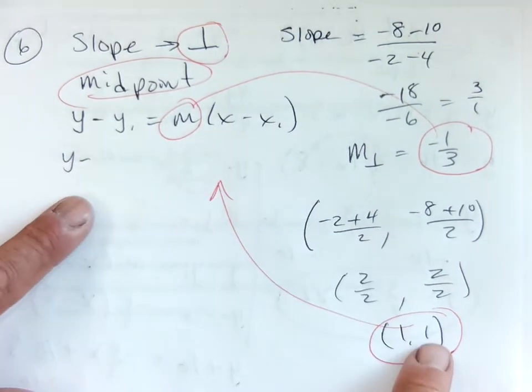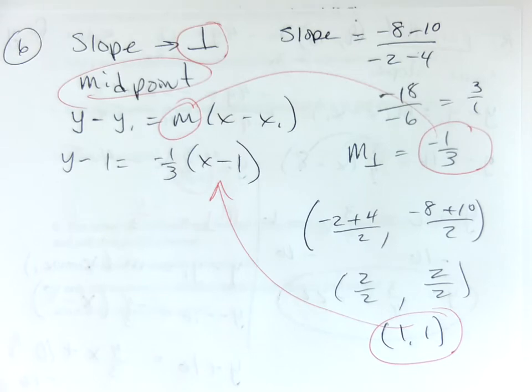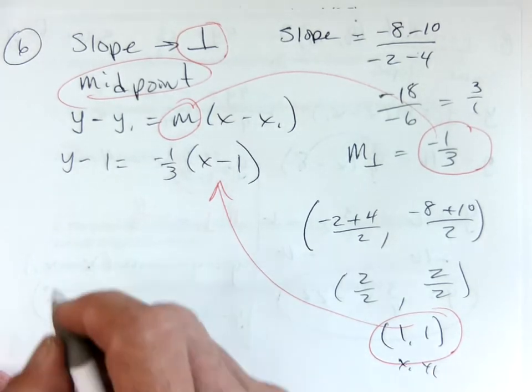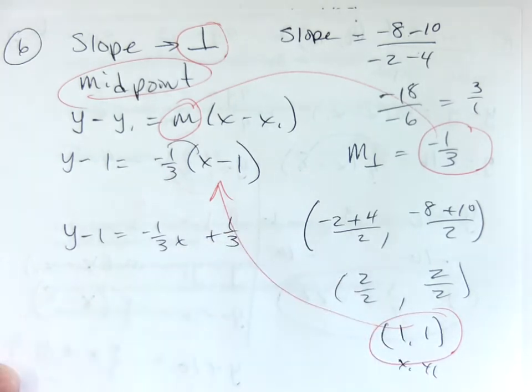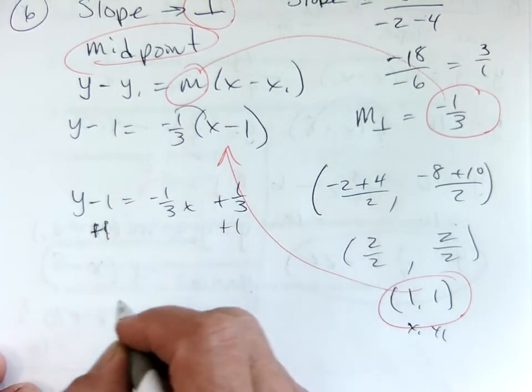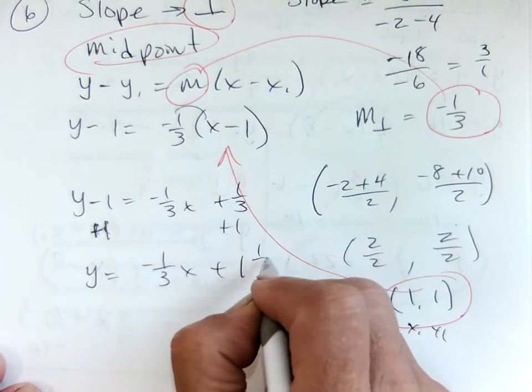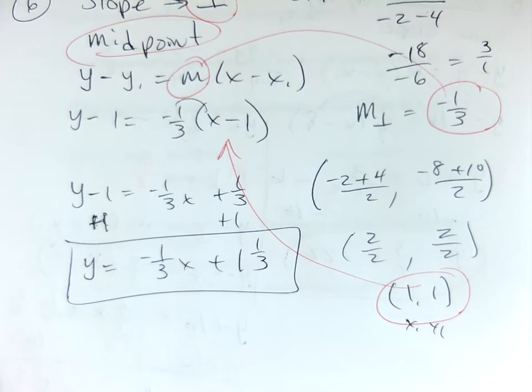So, I'll go y minus y1, which is 1, equals negative one-third times x minus x1, which is 1, okay? And I'm just going to simplify. Distribute, I get a negative one-third x plus one-third. Plus one-third, plus one-third, plus one, plus one, sorry, my bad. Plus one, plus one, I get one and one-third. Negative one-third x plus one and one-third.